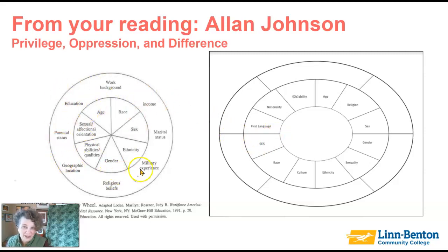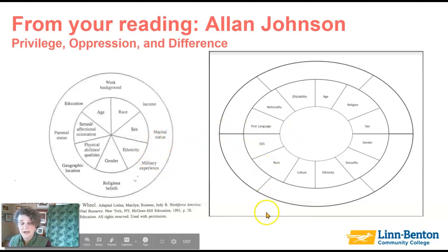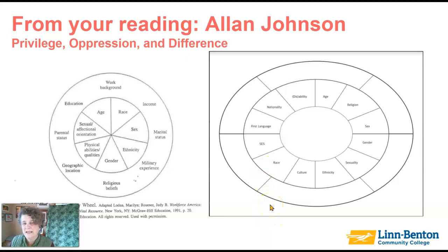Remember social characteristics — here's your social identity wheel that you have in your textbook this term, and here's another identity wheel from the reading you're doing this week by Alan Johnson. They are very similar; you'll see that a lot of the same things appear on both wheels. What's important about that is that these characteristics tend to have hierarchies assigned to them within our society that we may not even realize we've done.